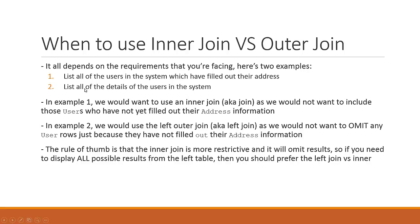In example two, it says list all the details of the users in the system — or more precisely, all the details of all the users in the system. So in example two we would want to use the left join, or the left outer join, as we would not want to omit any of the user rows just because they have not yet filled out their address information. We don't want to exclude any users — we want to see all users in the system, plus all the corresponding details we can find.